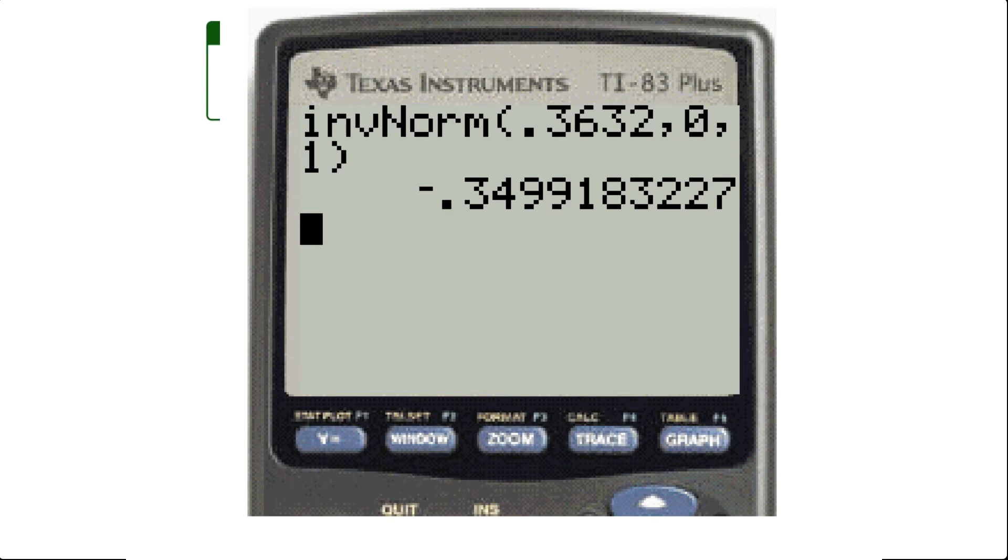What you're going to do is type in the area, the cumulative area or probability, and then 0 and 1. Those are the mean and standard deviation. If you were given a different mean and standard deviation, you would put those there. You can see we get a value of negative 0.3499, which when rounded gives us negative 0.35.